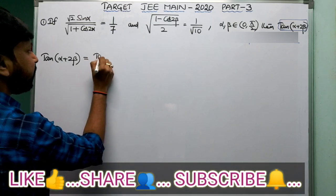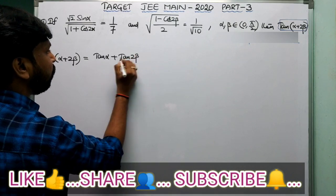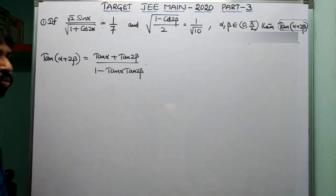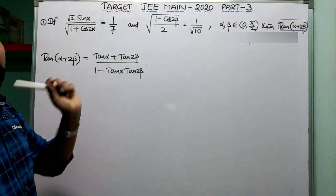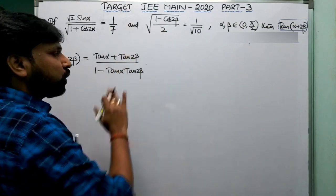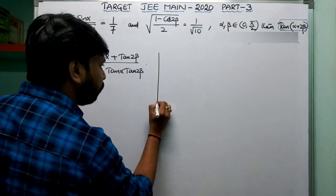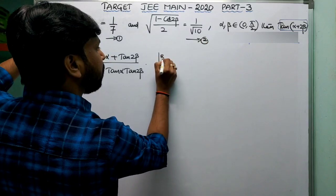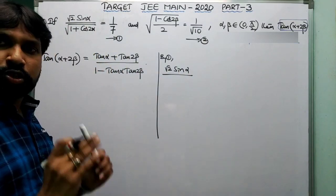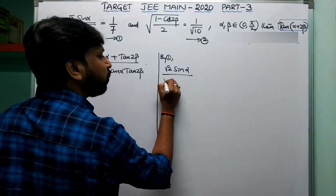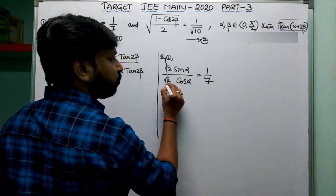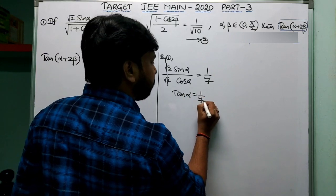The formula for tan(A + B) is (tan A + tan B) / (1 − tan A · tan B). Now focus on finding tan α and tan 2β. From equation 1: root 2 sin α divided by root(1 + cos 2α). Since 1 + cos 2α = 2cos²α, taking the square root gives root 2 · cos α. So root 2 cancels, leaving sin α / cos α = tan α = 1/7.